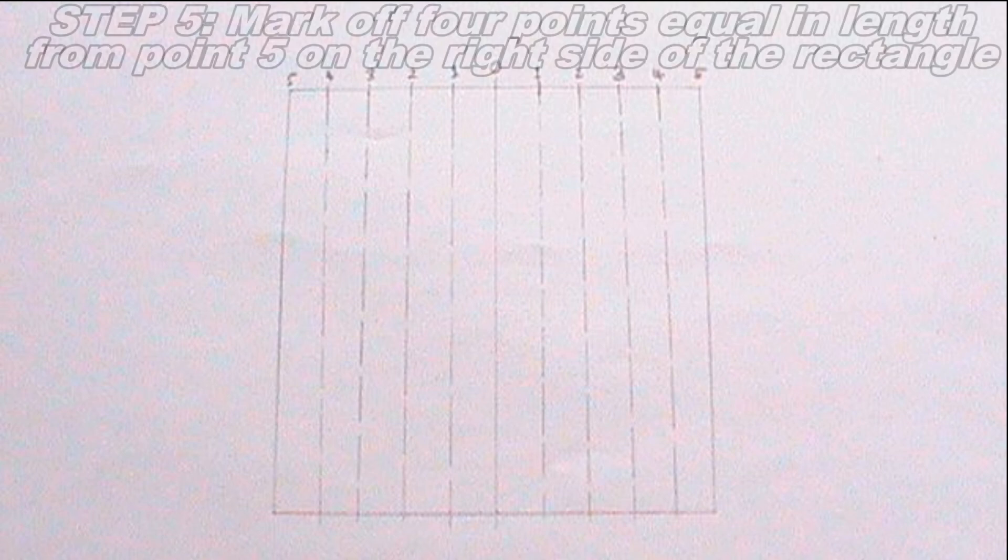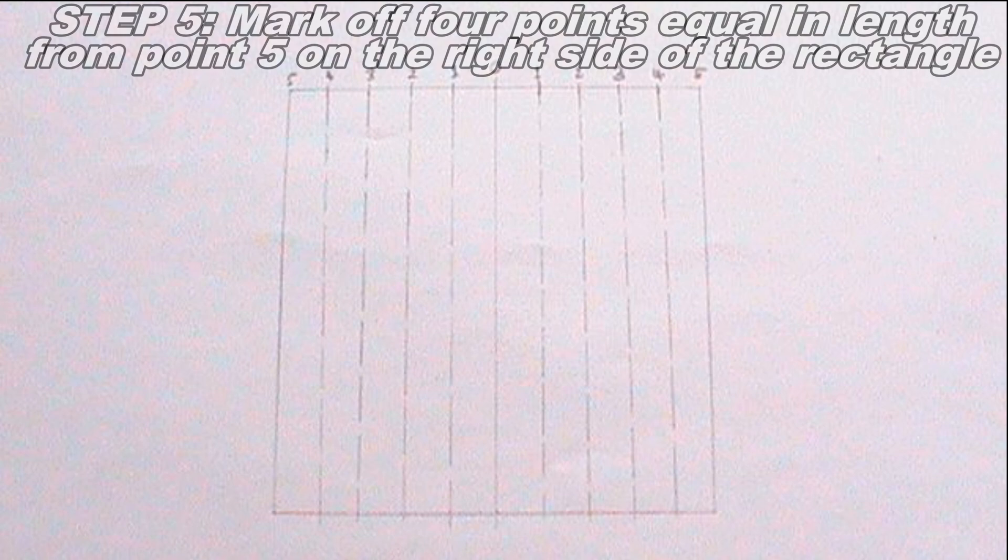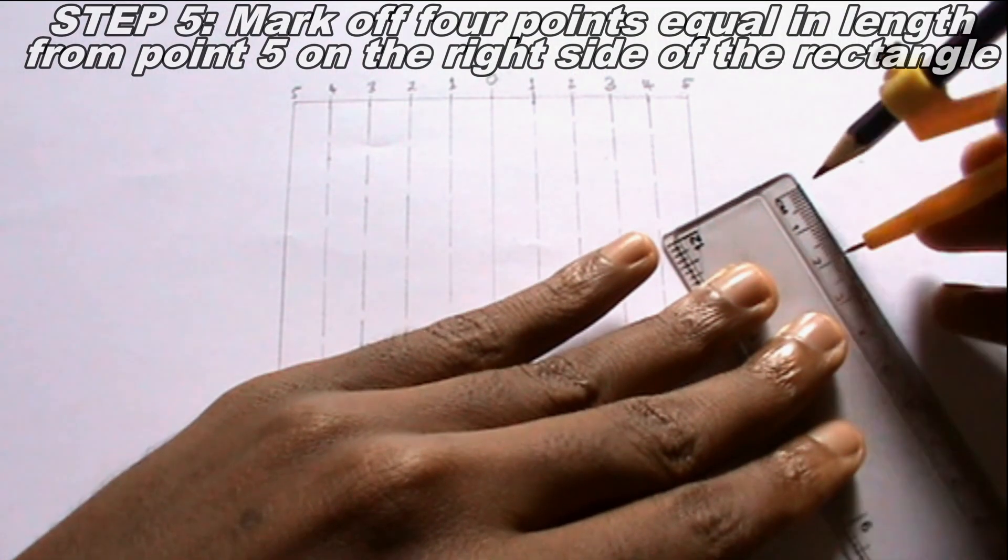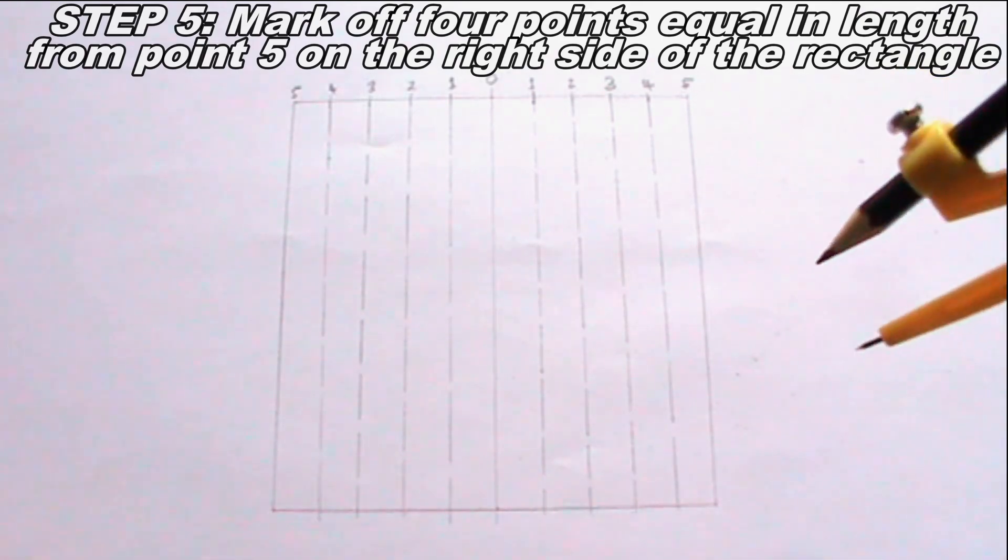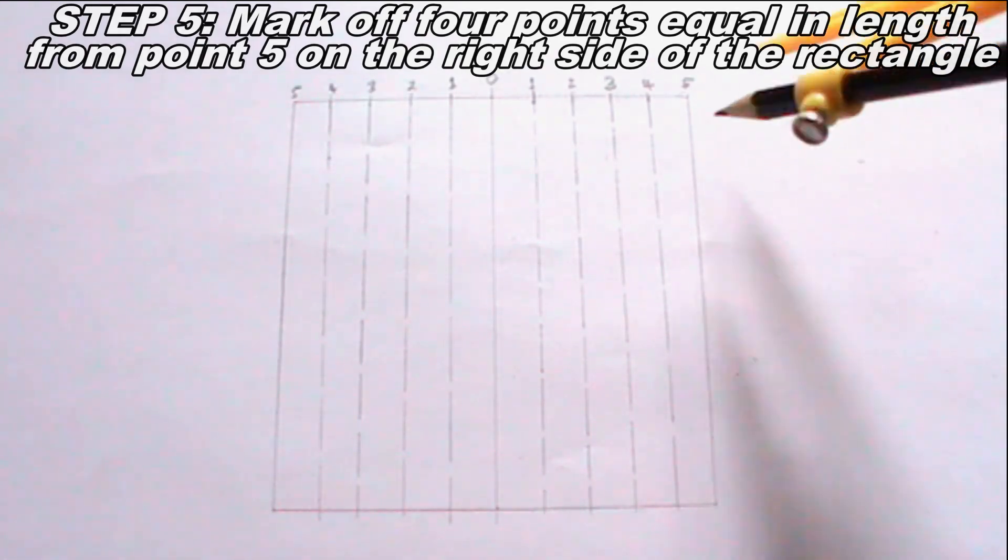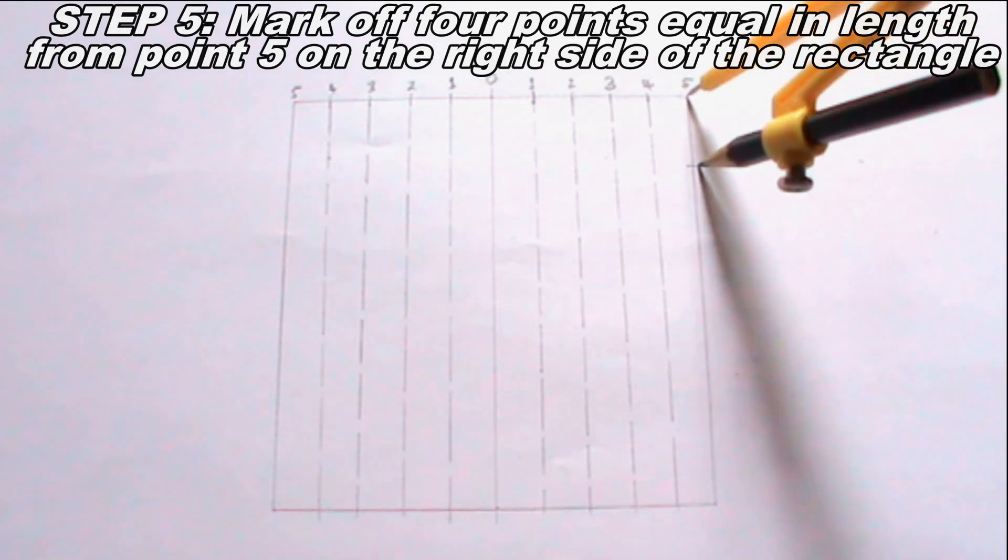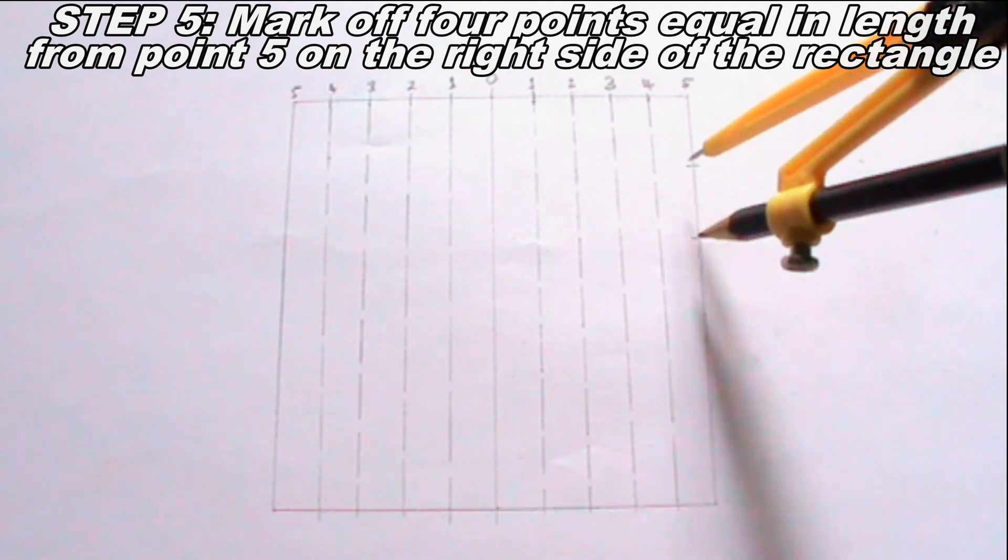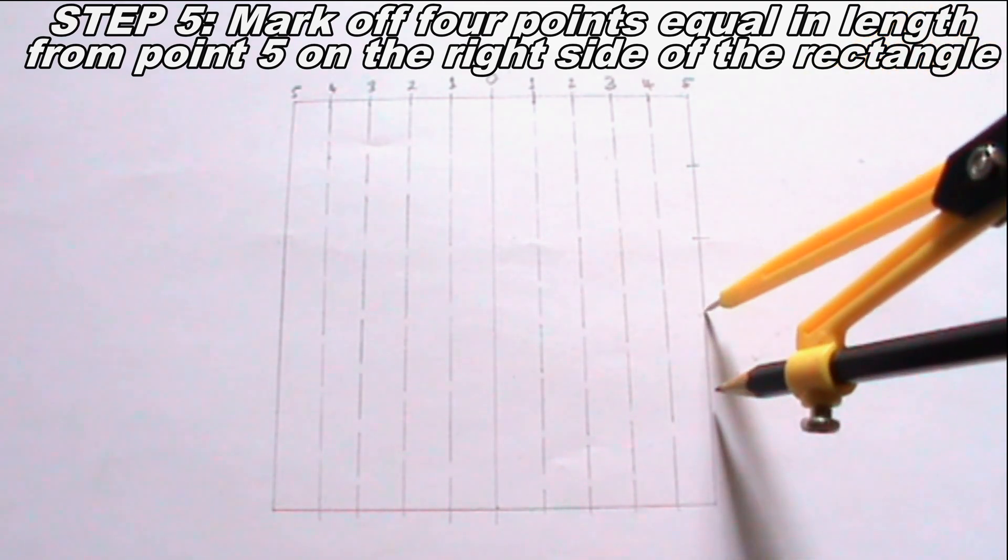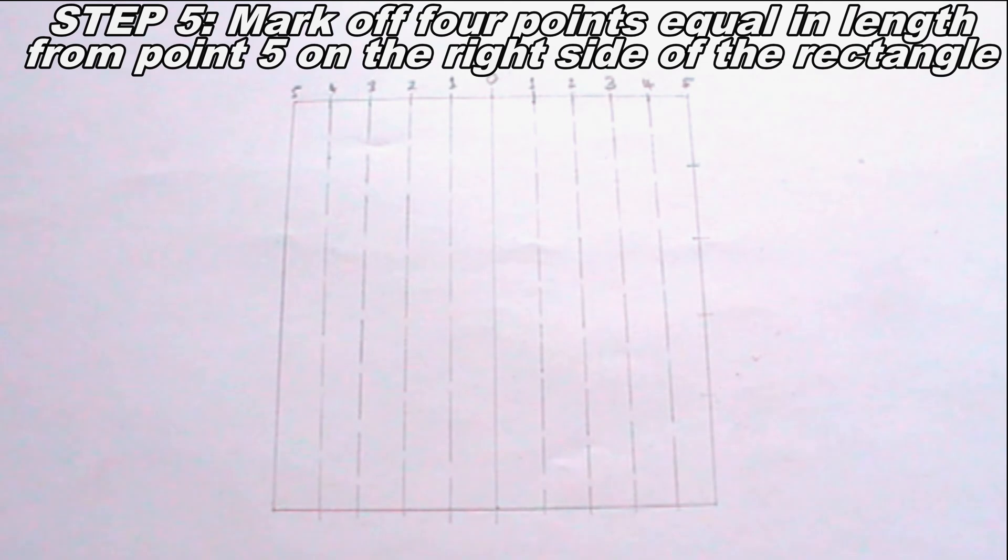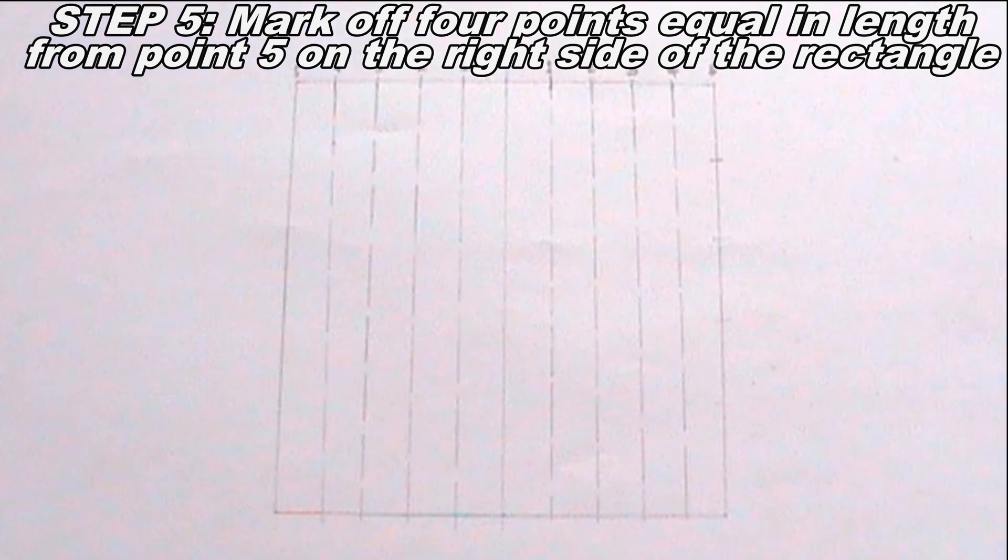The next thing I will do is to mark off 4 points equal in length from point 5 on the right side of the rectangle. I will perform this step using my compass. Having done that, I will label the points 1, 2, 3, 4 and the end of the line 5.